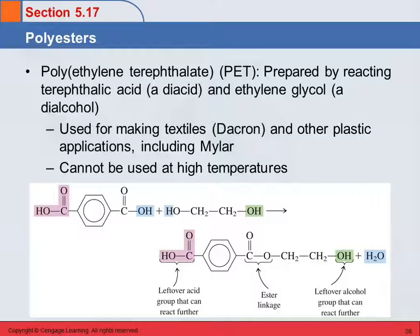A disadvantage of PET is that it cannot be used at high temperatures. It's good to reuse and recycle, but you need to be careful where and how you reuse your plastic food containers, because some of those are made out of plastic such as PET, which are not intended for use at high temperatures. If you take a yogurt container or sour cream container — something that came with something cold in it — and try to use it to put something hot, you can end up damaging the plastic container, or worse, leaching various organic substances into your food. So it's important to be careful with what you do with plastics.